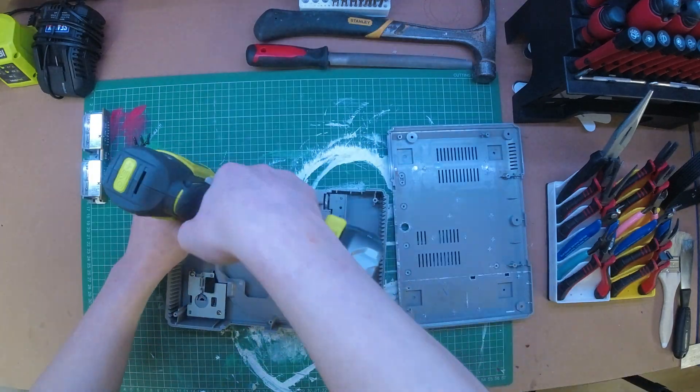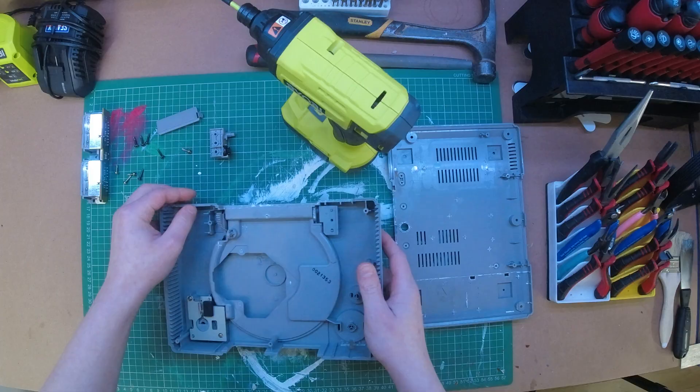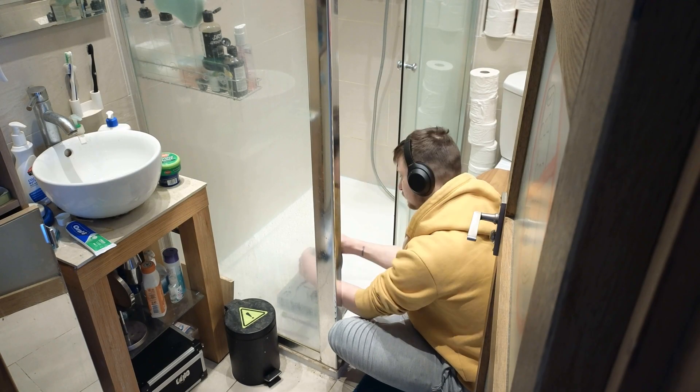Then, I'm gonna take it apart even further to its individual plastic components and give it a very thorough wash with soap and water. I was worried that the plastic was yellowed when I started, but it turns out it was just very dirty, so no need for hydrogen peroxide.